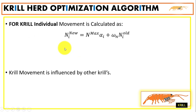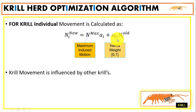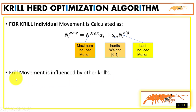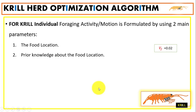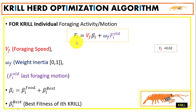The mathematical model for krill movement includes the maximum induced motion, the inertia weight (a value between 0 and 1), and the last induced motion. Note that krill movement is influenced by other krills. For foraging motion, we have two main parameters: the food location and prior knowledge about the food location.